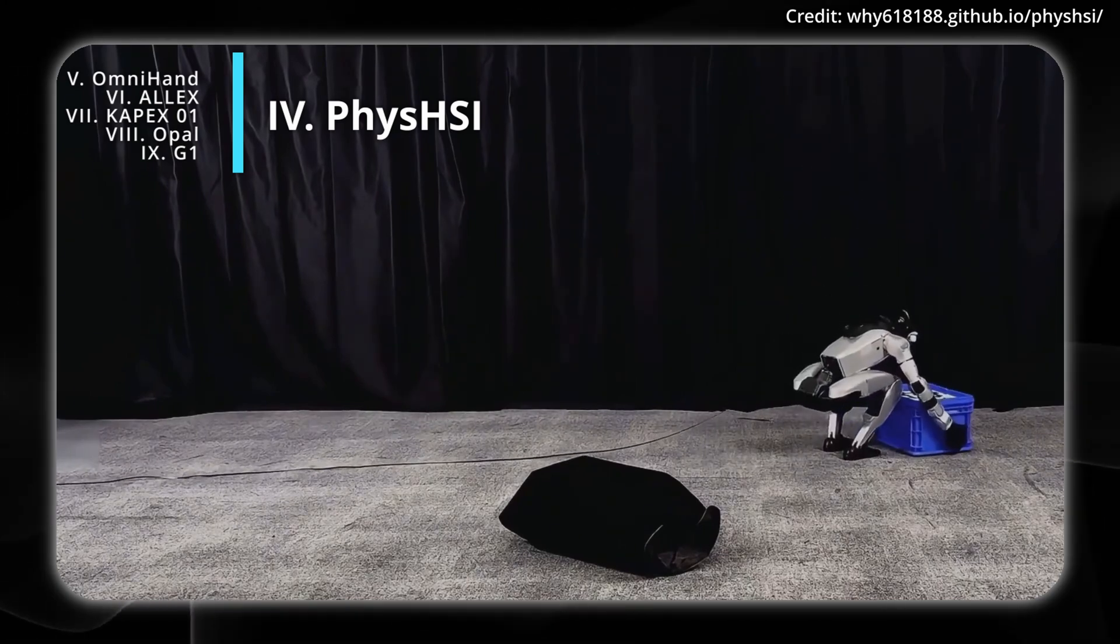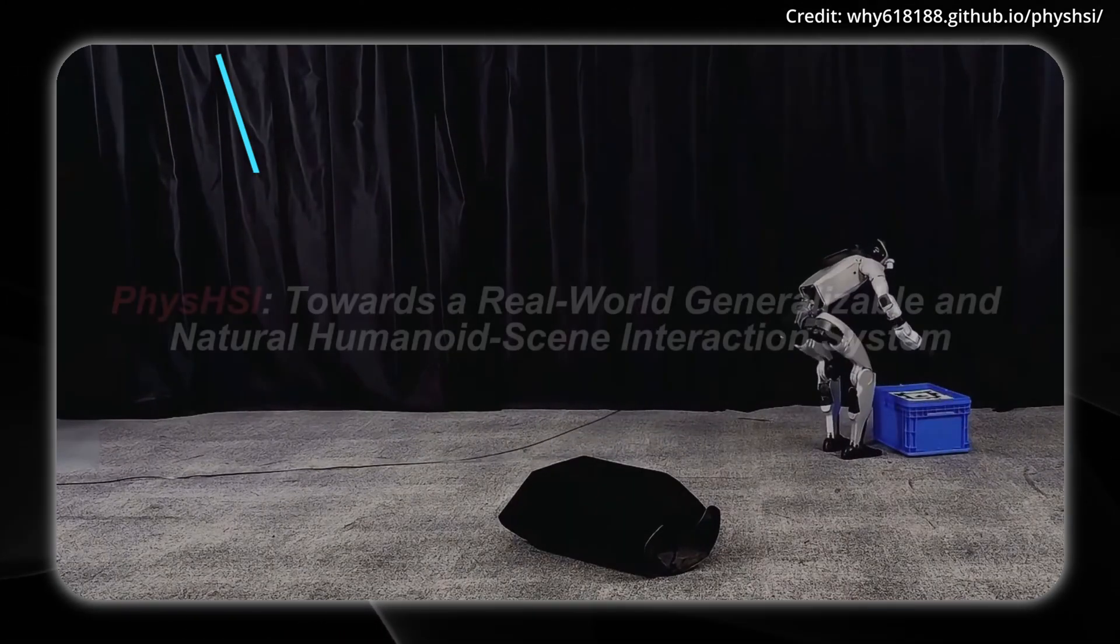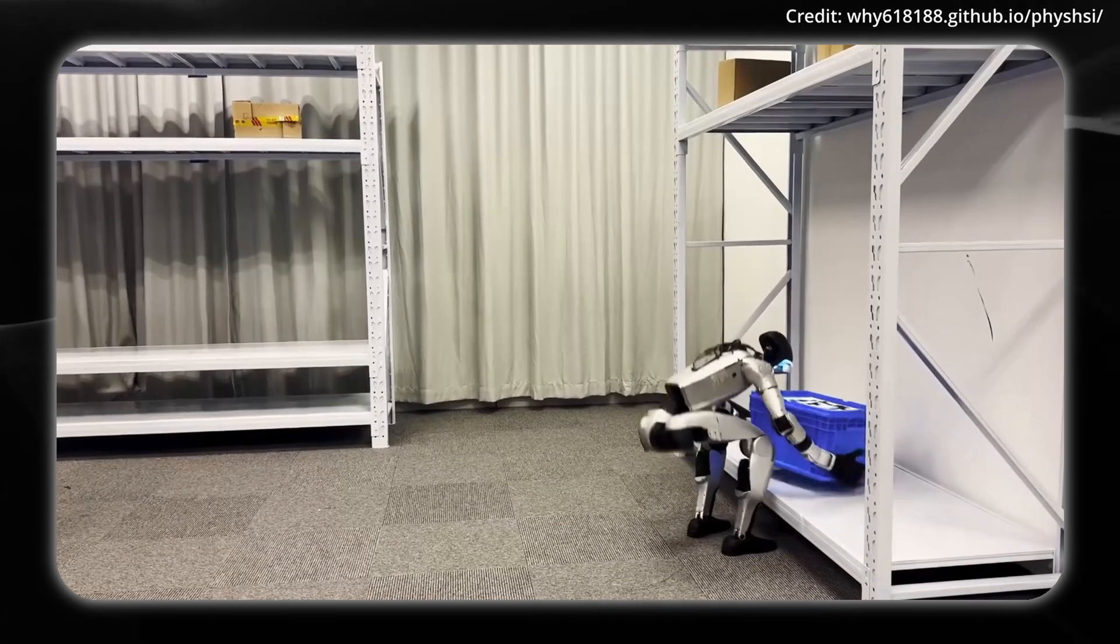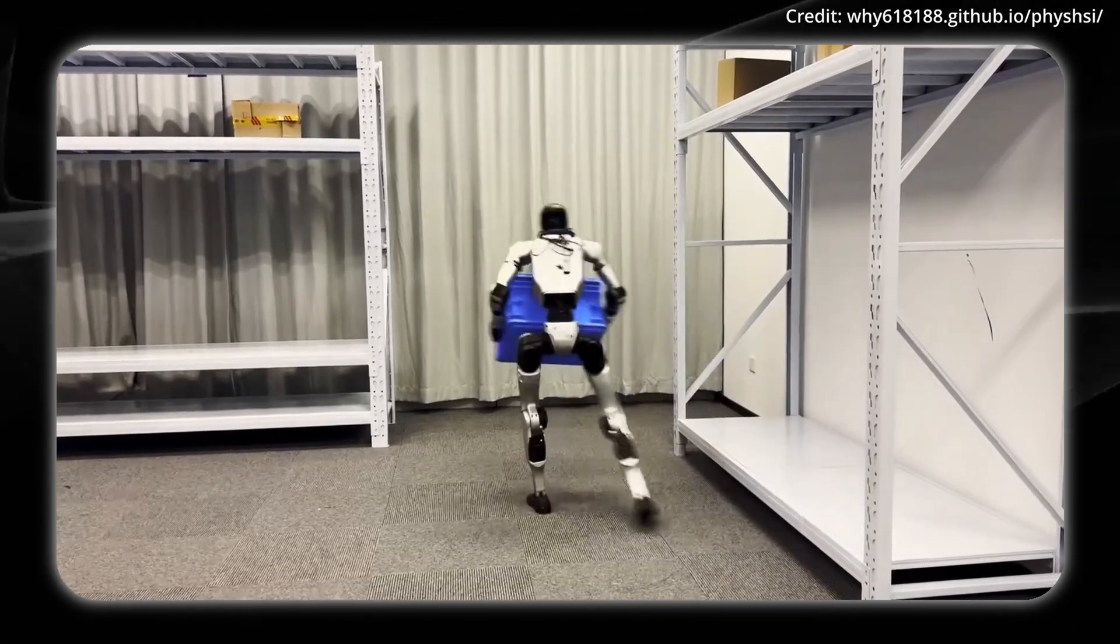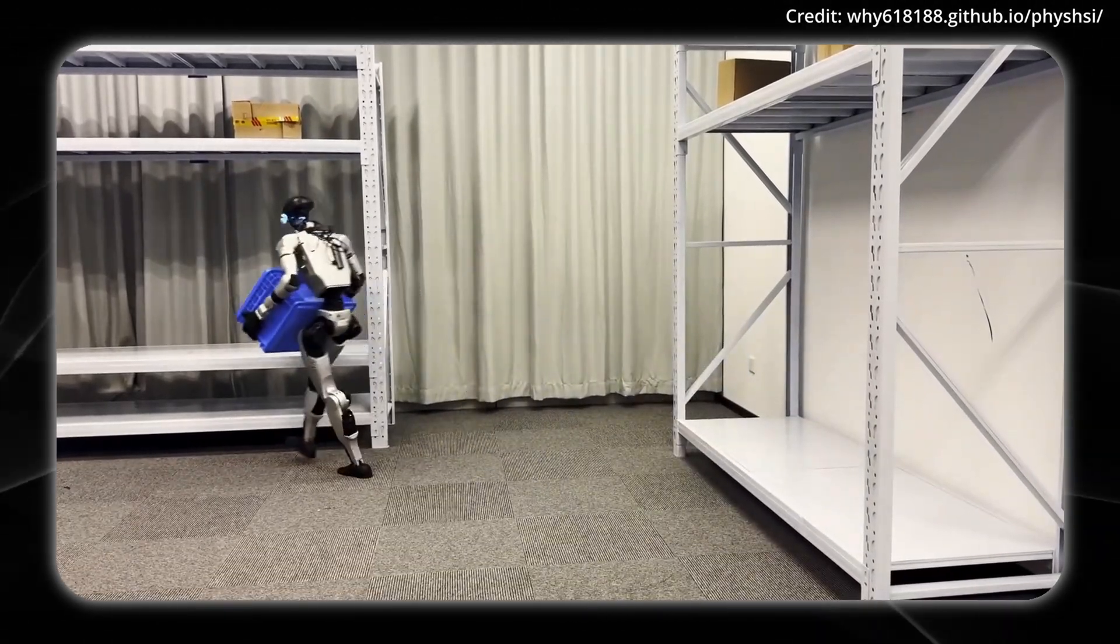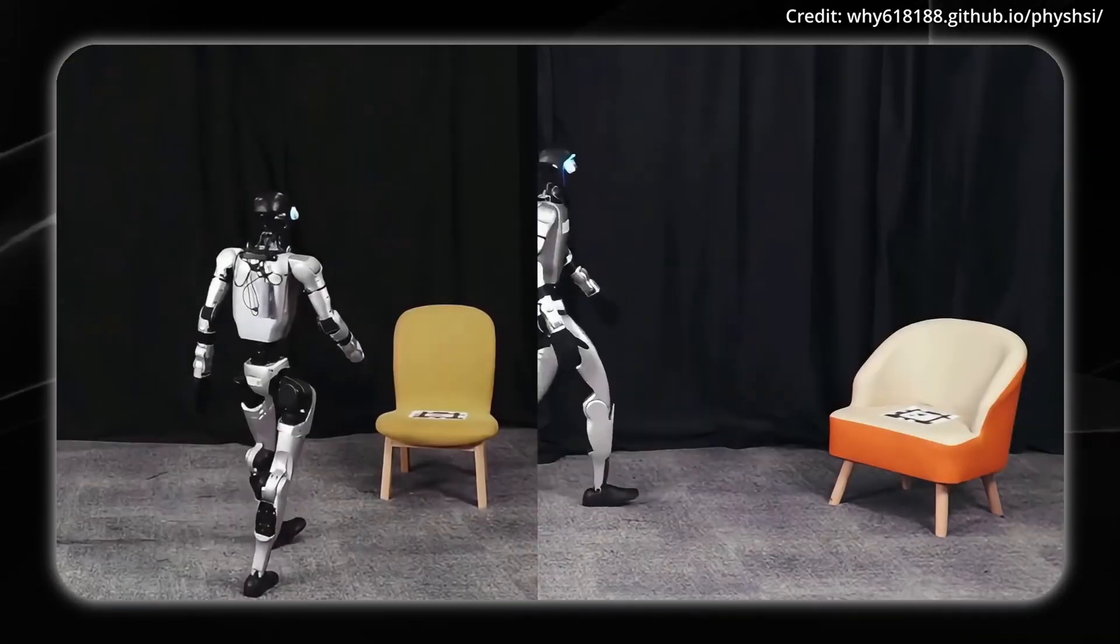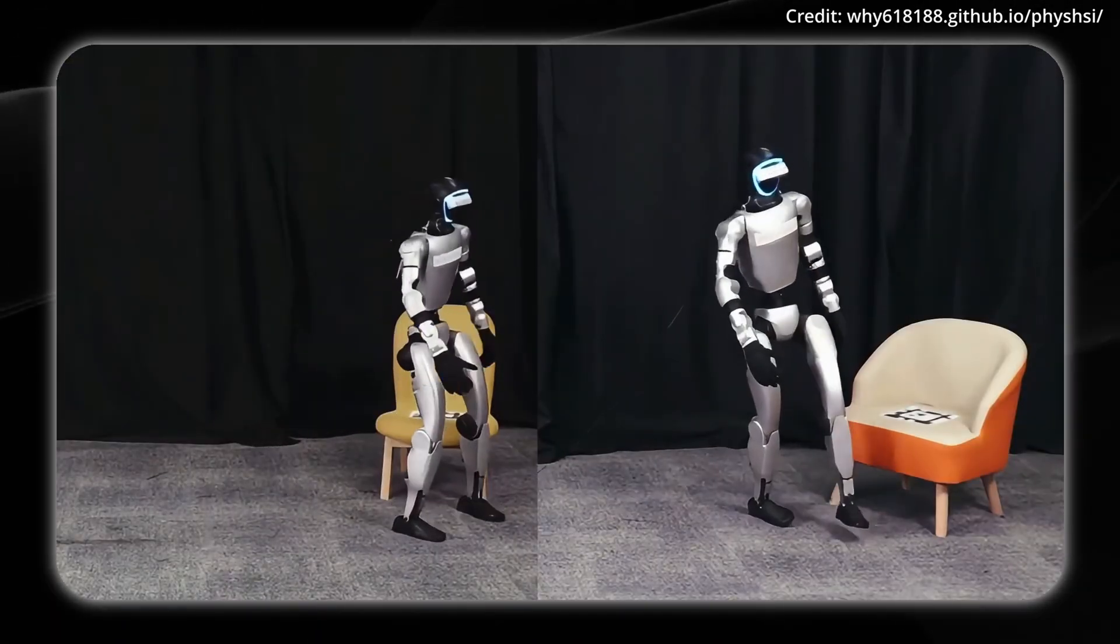PhysHSI lets robots interact naturally with the real world. The challenge here is in combining generalizable motion with robust scene perception, which are two capabilities that have previously been developed separately, but are rarely combined effectively. And to accomplish this, PhysHSI uses a two-stage process.